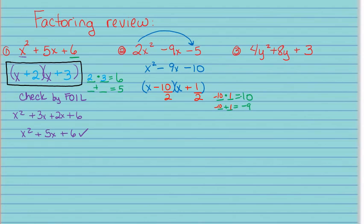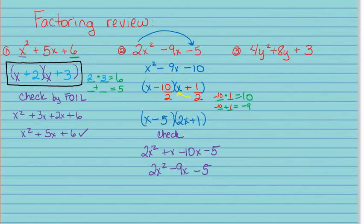Because of that divide by 2, this factor turns into x minus 5. The other one has a fraction, so we say 'bottoms up' — the 2 comes and lives next to that x, making it 2x plus 1. Checking by FOIL gives 2x squared plus x minus 10x minus 5, which equals 2x squared minus 9x minus 5. So my factors are x minus 5 and 2x plus 1.